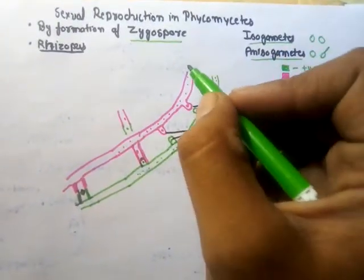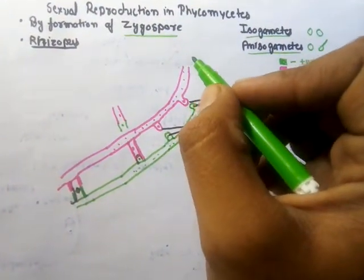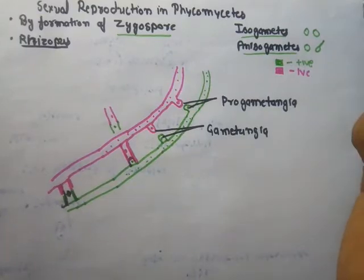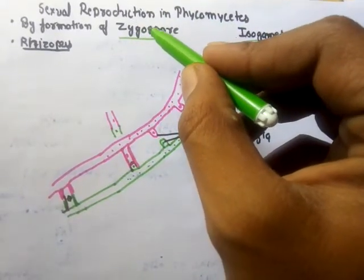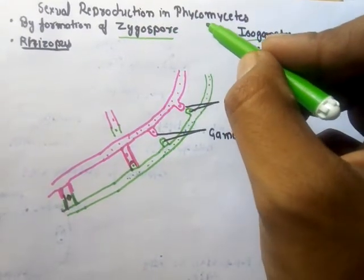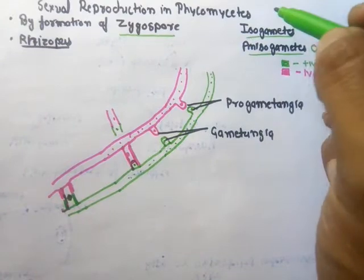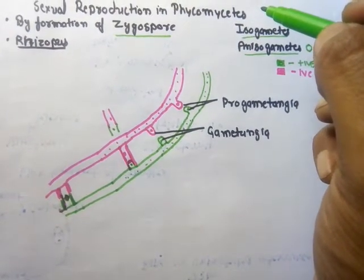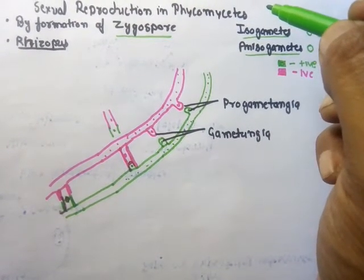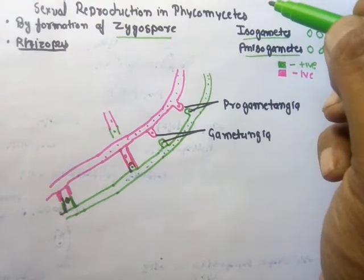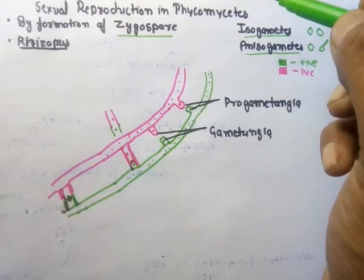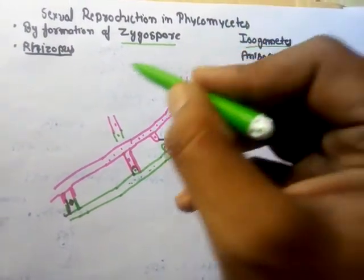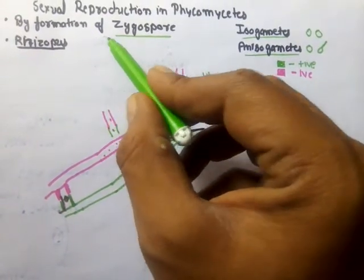Good morning, I am Anshur Sharma, your biology teacher. In this video tutorial we are going to discuss sexual reproduction in class Phycomycetes. As you know, class Phycomycetes includes the lower fungi, which can be further divided into two subclasses: Mastigomycetes and Zygomycetes.